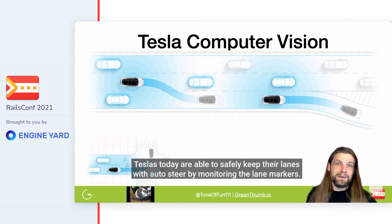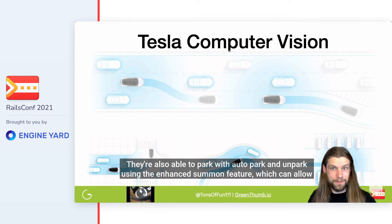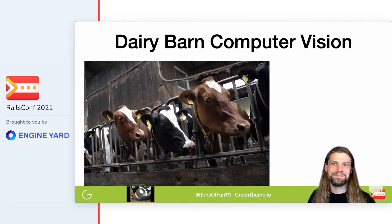Teslas today are able to safely keep their lanes with Autosteer by monitoring the lane markers. They're also able to park with Autopark and Unpark using the enhanced unsummon feature, which can allow your car to come to you from across a parking lot.